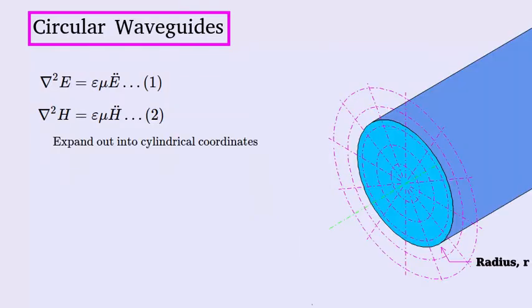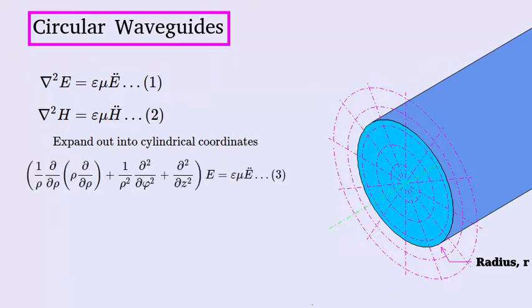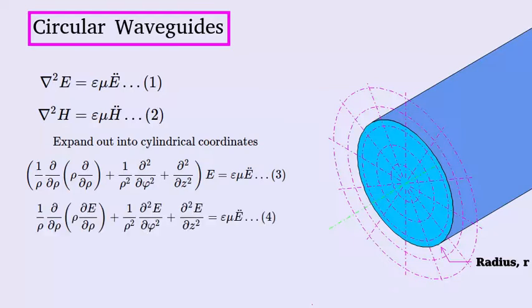So now we'll expand the first vector calculus equation out into cylindrical coordinates, and this is what it looks like after it has been expanded. It is a lot more messy looking than it is for rectangular coordinates. And then we can expand out this operator contained in the brackets so that the variable E is fully incorporated into this equation.